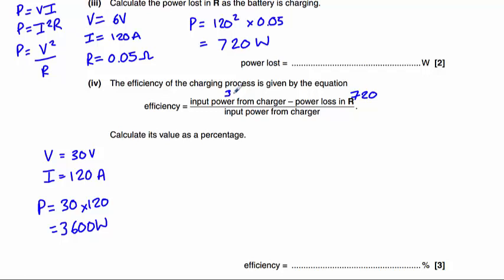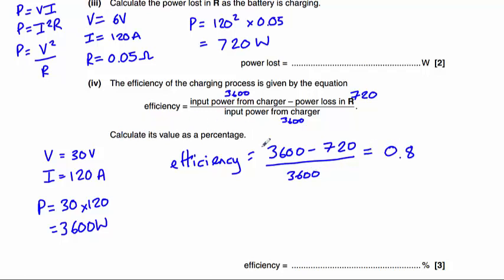So now we know everything we need to know for this question. That is 3,600, and that is 3,600. So therefore efficiency equals 3,600, take away 720, divided by 3,600, which equals 0.8. Now remember the question is asked for the value as a percentage, so 0.8 equals 80%.